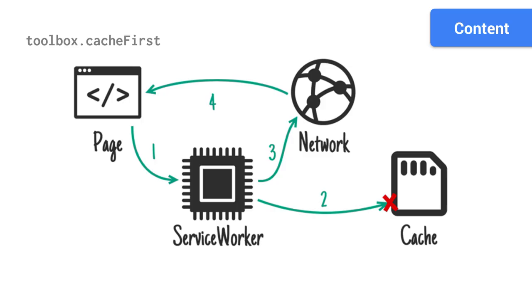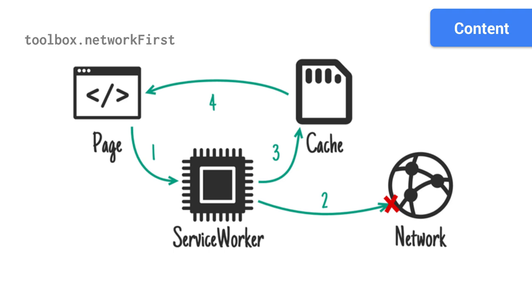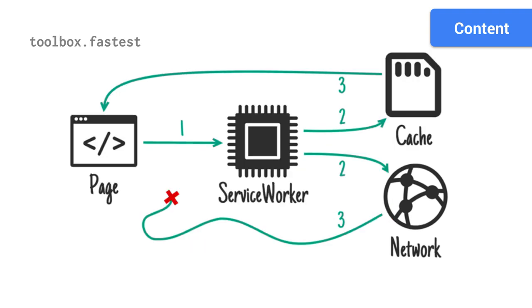Toolbox.fastest is good for large or infrequently used resources. Toolbox comes with a ton of different caching mechanisms out of the box — network first, cache first, fastest, and more. It's entirely geared towards runtime caching, and you end up saying: for this path, do this thing — which is what you'd have to write yourself in a raw service worker anyway.